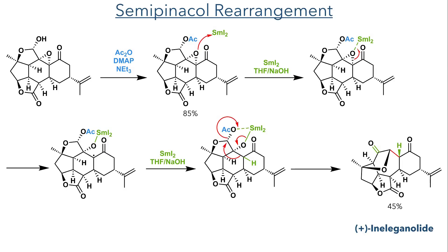The compound is reacted with samarium iodide, which first coordinates to the epoxide, opening the ring to leave a radical residing on the alpha position. This radical then reacts with another equivalent of samarium iodide, which reduces it further to form an anion, which is rapidly protonated by water present in the reaction mixture. The samarium, coordinated to the alkoxide, can also coordinate to the acetate group, activating it as a leaving group and allowing for a semi-pinacol rearrangement to occur.